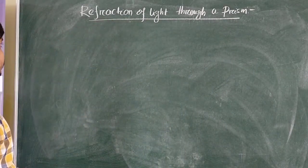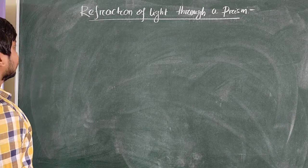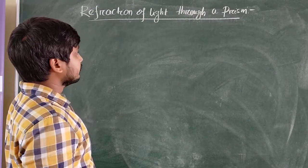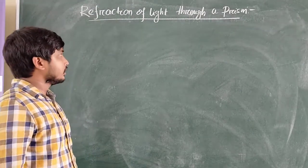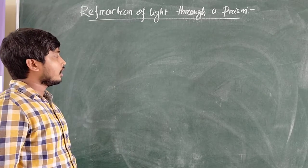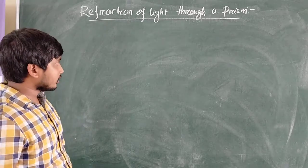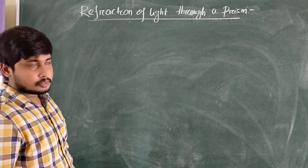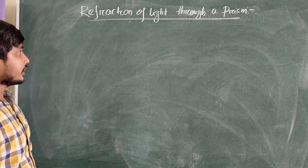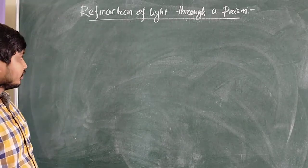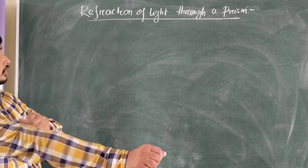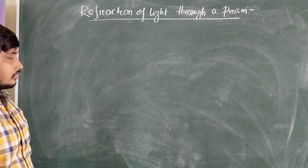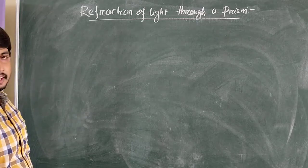In this video we will discuss the refraction of light through a prism — meaning, if light passes through a prism, how it will refract. We will also find out the relationship between the angle of incidence, angle of deviation, and the refractive index of the prism. Here we will be discussing a triangular base prism, meaning the base of the prism will be a triangle.